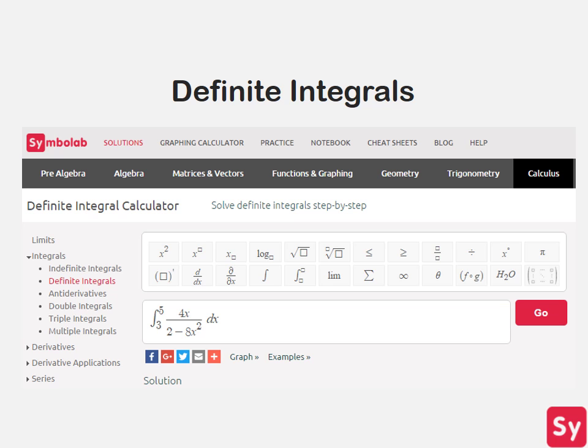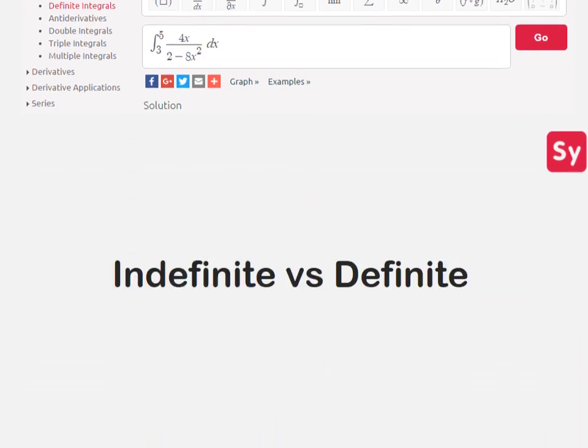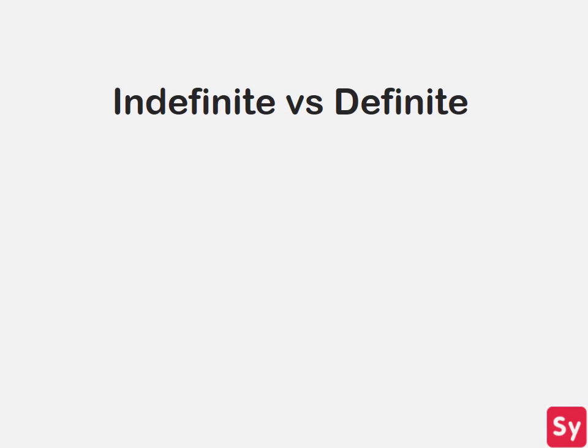Hey guys, it's Leah. Today we will learn how to solve definite integrals. So far we've been learning how to solve different types of indefinite integrals. Indefinite integrals give an equation for the area under a curve. This equation is also known as the antiderivative.